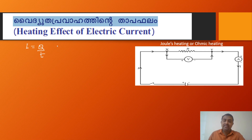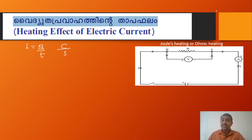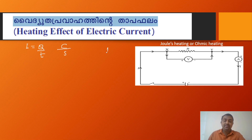Current I is equal to q divided by t — rate of flow of charge. Now, we have two points x and y. We have a potential difference between these two points x and y. The potential difference is defined as the work done in carrying one coulomb of charge from x to y.